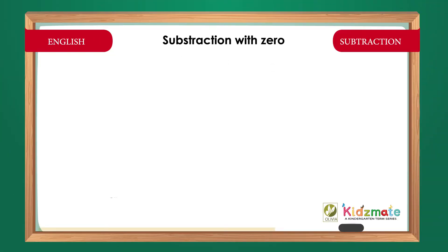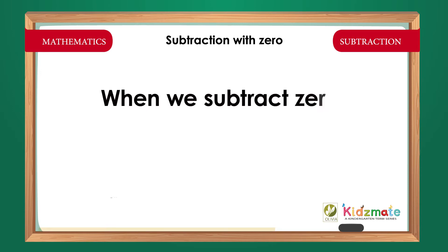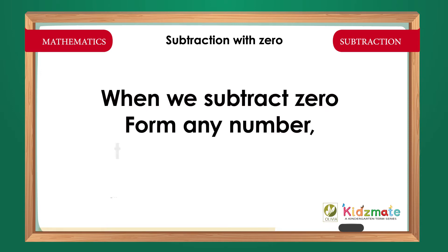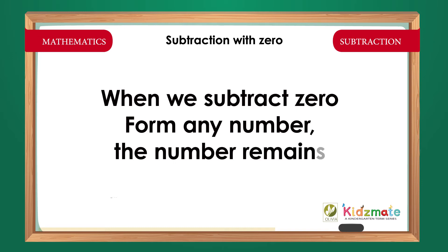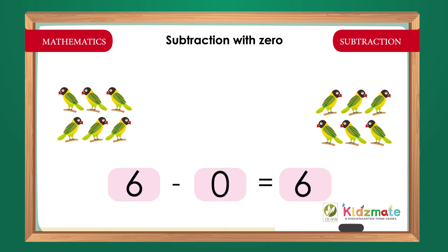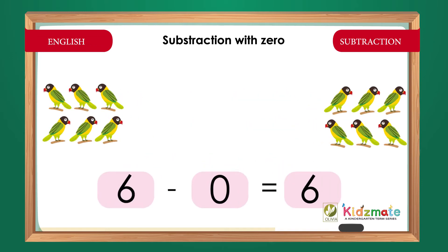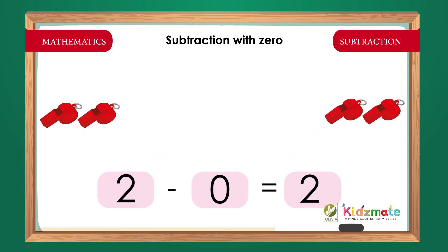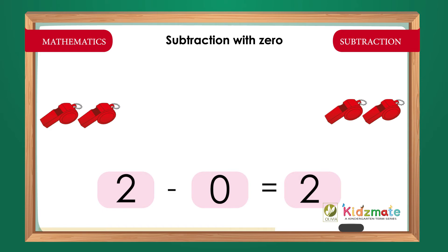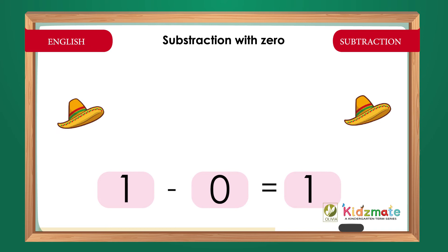Subtraction with 0. When we subtract 0 from any number, the number remains the same. 6 minus 0 is equal to 6. 2 minus 0 is equal to 2. 1 minus 0 is equal to 1.